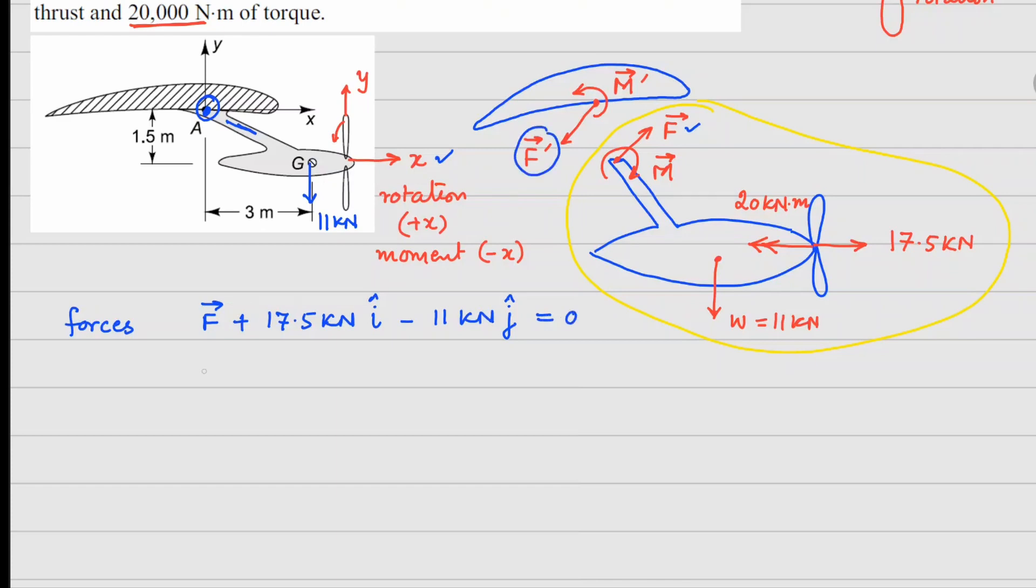Now, we know that F equals minus F' because their directions are opposite. So we can rewrite this as minus F' plus 17.5 i cap minus 11 kN j cap equals 0. So from this directly, we can figure out the forces on the aircraft wing are 17.5 i cap minus 11 j cap kN. So these are the forces that we have got.